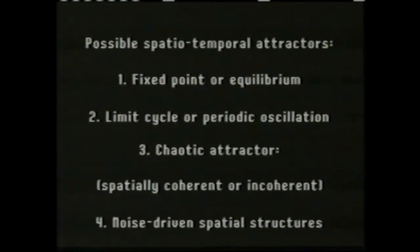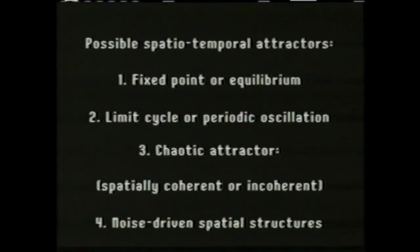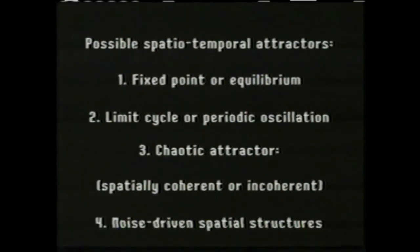Energy flows through the video feedback system and is dissipated—a process analogous to friction in a mechanical oscillator. Dissipation causes an initial pattern to evolve through a transient phase into a small region of state space called the attractor. Attractors fall into a hierarchy of distinct behavioral classes based on complexity. Fixed points and limit cycles describe regular, repetitive dynamics, whereas chaotic attractors describe unpredictable behavior.